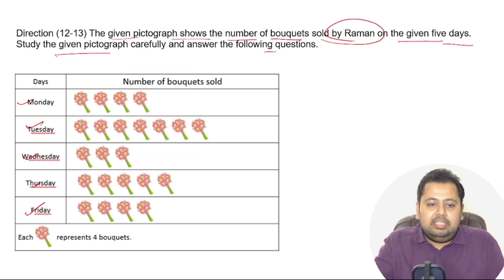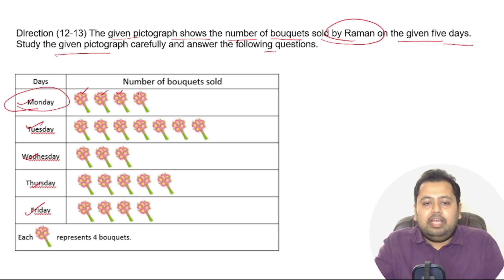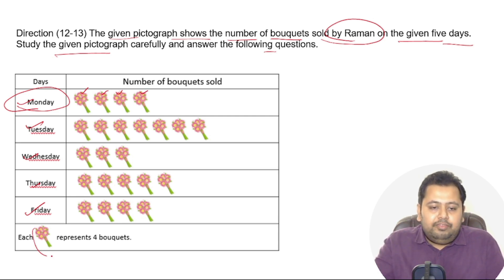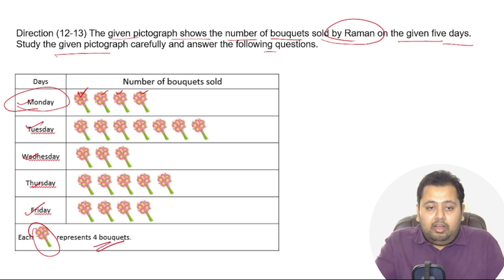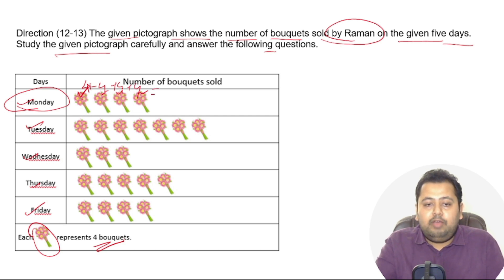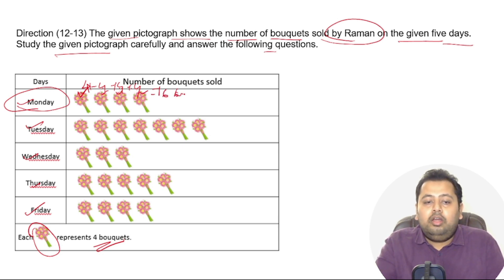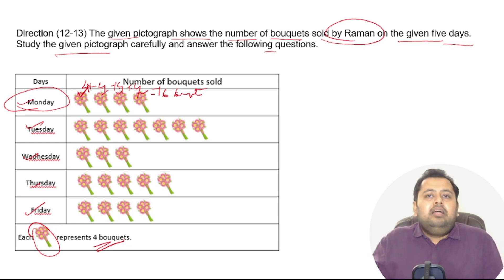On Monday, you can see there are four bouquet images given, and each image represents four bouquets. This means on Monday Raman sold four plus four plus four plus four — that is, four plus four is eight, eight plus four is twelve, twelve plus four is sixteen. So Raman sold sixteen bouquets on Monday.